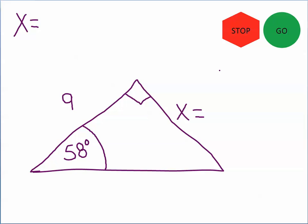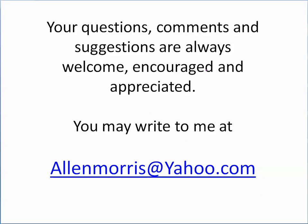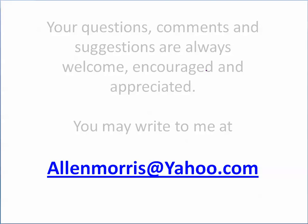All right, we're looking for the value of x. Click on the stop sign and give it a try. We're dealing with knowing the opposite side, looking for the opposite side, and we know the adjacent side and the angle. So the tangent of 58 degrees equals x divided by 9. The tangent of 58 degrees, correct to one decimal place, is 1.6. So 1.6 equals x divided by 9. Multiplying both sides by 9, x equals 14.40 units. Your questions, comments, and suggestions are always welcome, encouraged, and appreciated. You may write to me at alanmorris at yahoo.com.